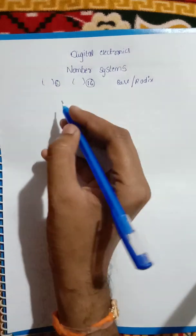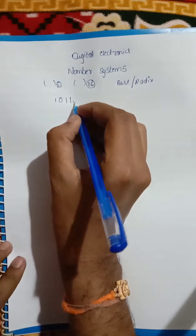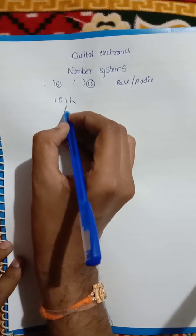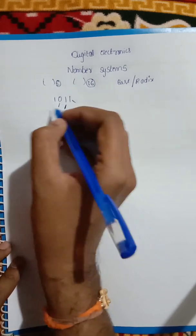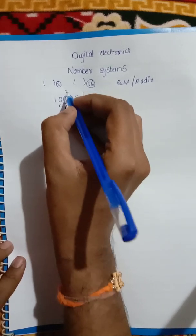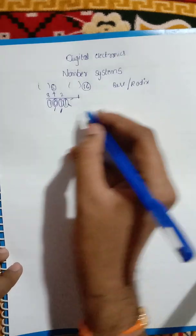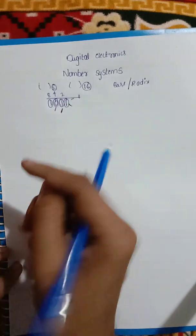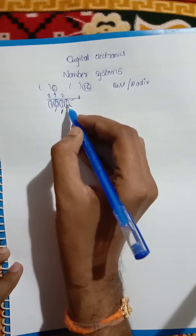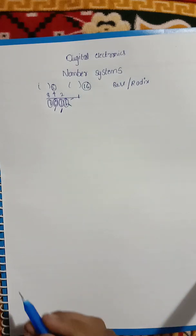You will represent the number 1, 0, 1, 1 — that is 1011. Each digit has a place value: this place is the 1s place, this is the 10s place. This digit is 1, this digit is 2, this digit is 4, this digit is 8. This is the 8, 4, 2, 1 code. Each digit has a particular value.